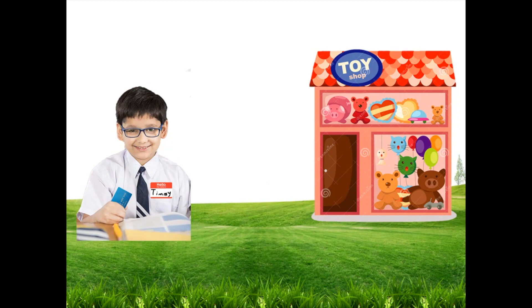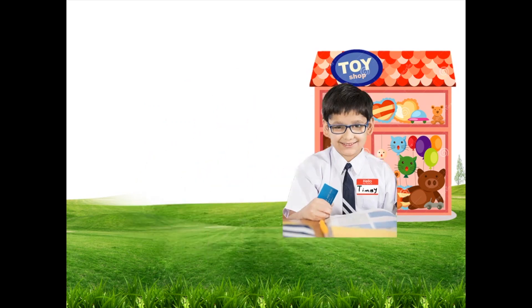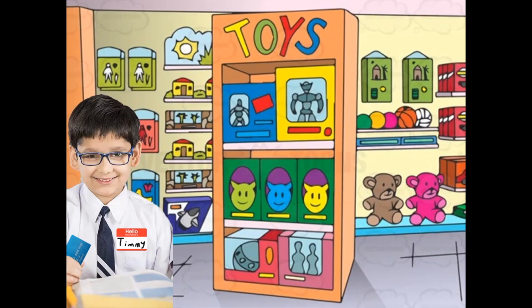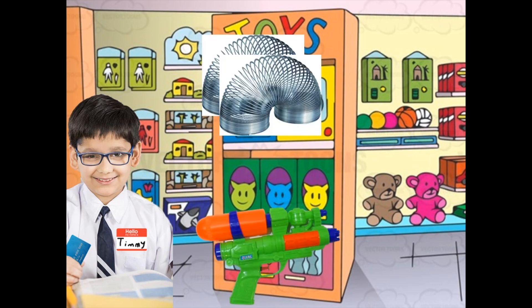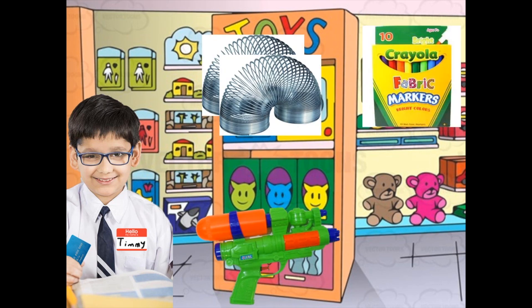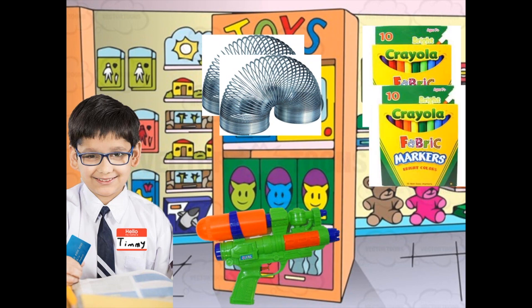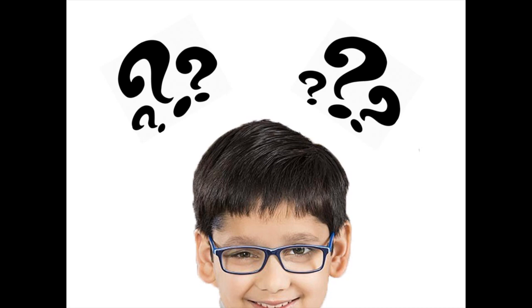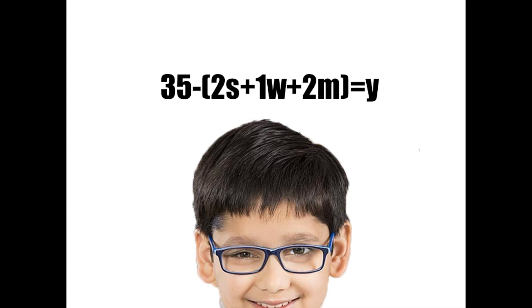Here's Timmy. Timmy has $35 on his mom's credit card to spend at the toy store. He plans on getting two slinkies, one water toy, and two sets of markers. Timmy needs to know how much he will have left over. To do that, he will use an equation like this, where S stands for slinky, W stands for water toy, and M stands for markers. Now he has to plug in the cost of the toy so the equation becomes...